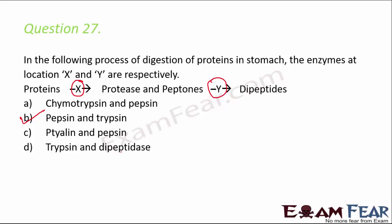Chymotrypsin acts on proteins, proteases, peptones, and large peptides and converts them into smaller peptides, similar to trypsin converting them into dipeptides. Dipeptidases are enzymes that help in conversion of dipeptides into amino acids.